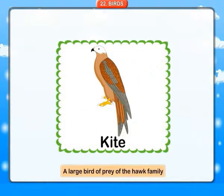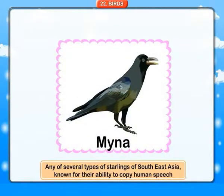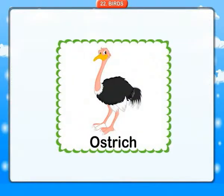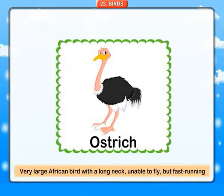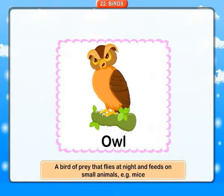Kite: a large bird of prey of the hawk family. Myna: any of several types of starlings of South East Asia, known for their ability to copy human speech. Ostrich: a very large African bird with a long neck, unable to fly but fast running. Owl: a bird of prey that flies at night and feeds on small animals such as mice.